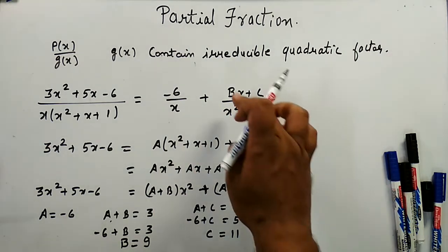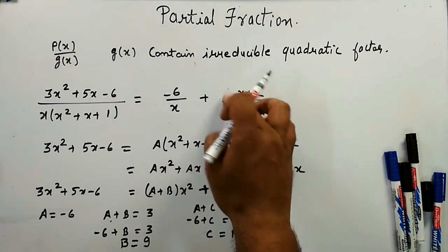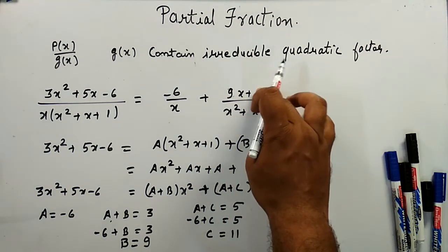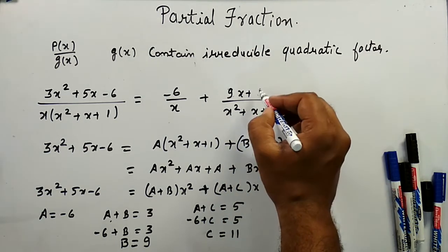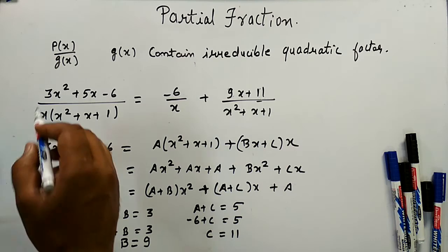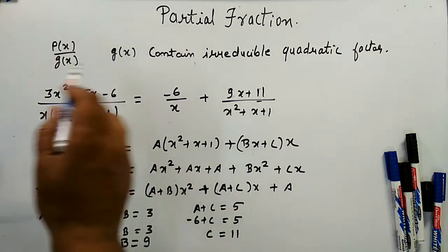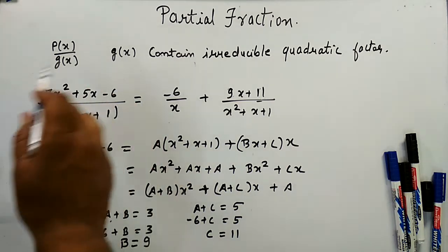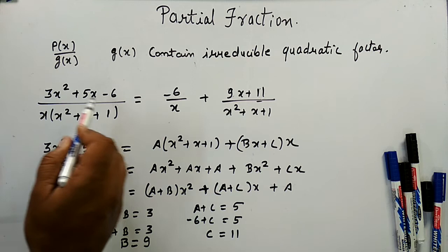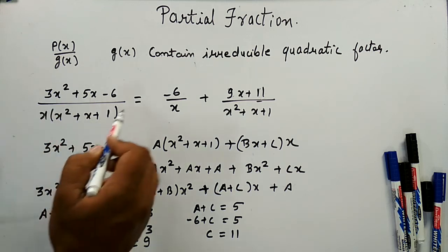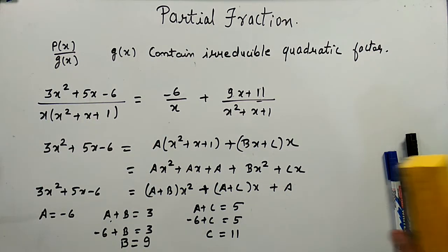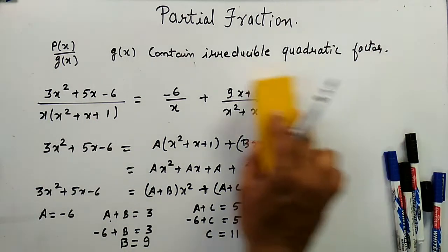So substituting A = -6, B = 9, and C = 11 gives us the partial fraction decomposition of this rational expression with an irreducible quadratic factor. Now for the second example.